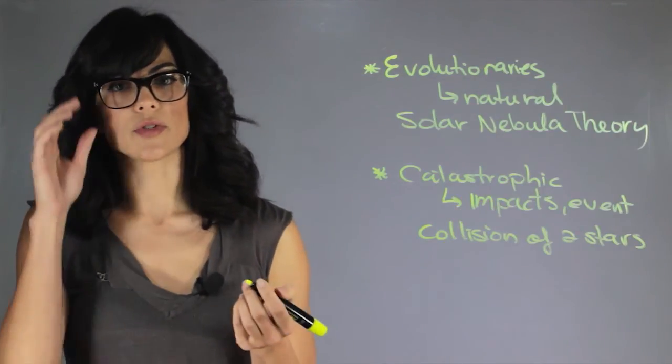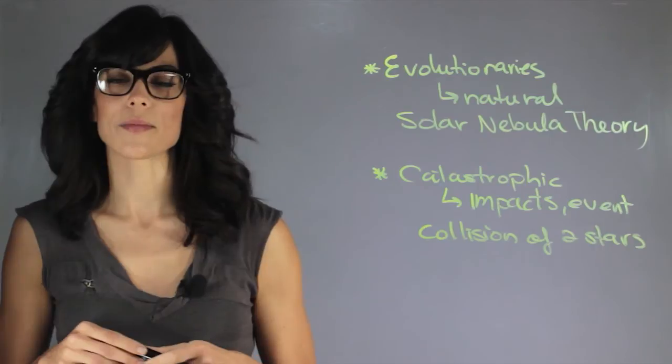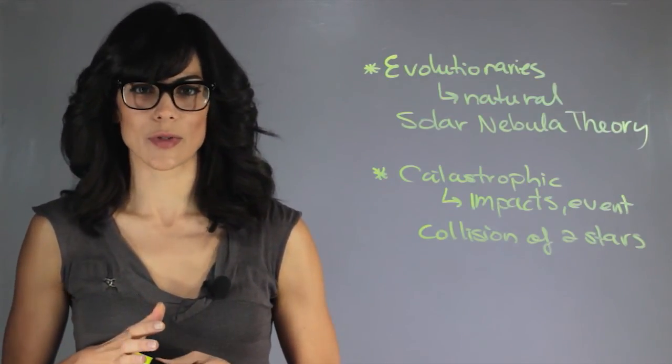And these are some of the examples of the two types of theories that we have for the solar system. My name is Aileen Perez, and I'm an astrophysicist, and this is The Evolution and Catastrophic Theories of the Solar System.